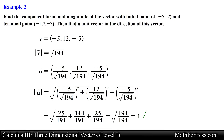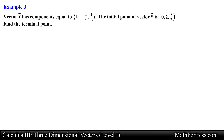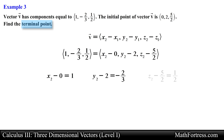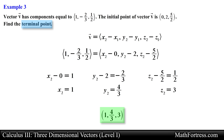Final example: vector v has components (1, −2/3, 1/2) and its initial point is (0, 2, 5/2). Find the terminal point. We use the expression for finding the components of a vector and work backwards — taking the initial point and subtracting each coordinate from the terminal point coordinates should yield the component form. Solving for the x, y, and z coordinates of the terminal point, we obtain (1, 4/3, 3) as the coordinates of the terminal point. In our next video we will go over slightly more challenging examples.